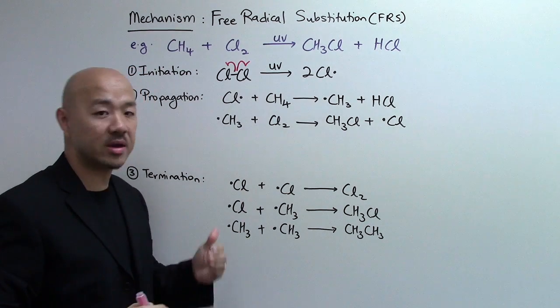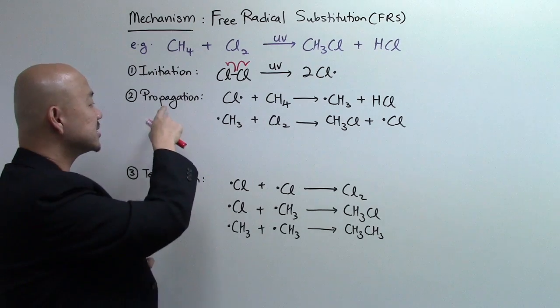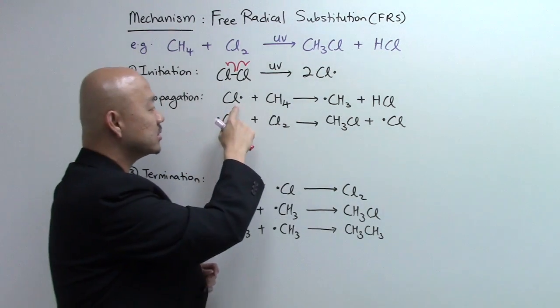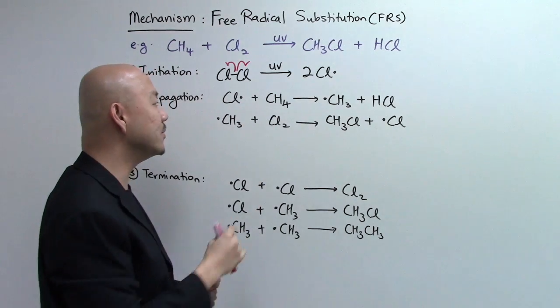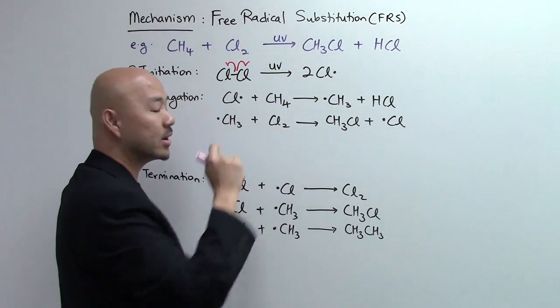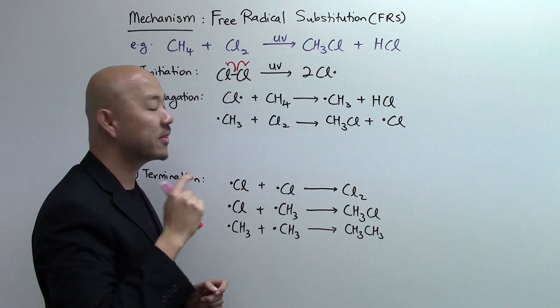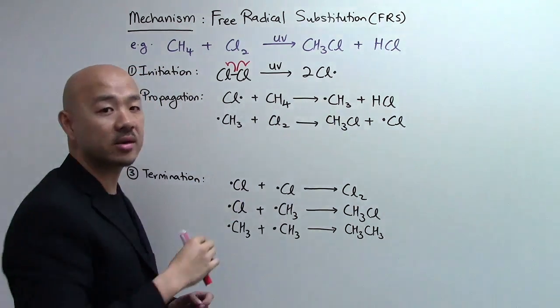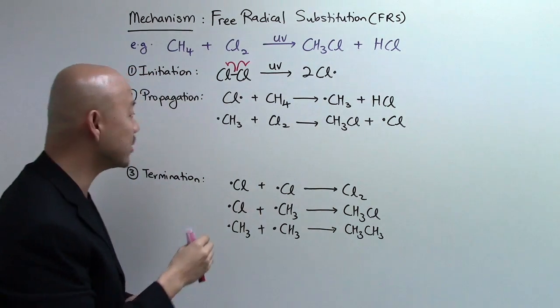In the second step, in propagation, the chlorine radical that was produced earlier on in step one will then react with the methane molecule to form a CH3 methyl radical and HCl, hydrogen chloride.